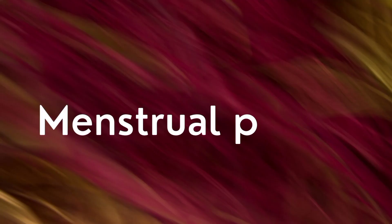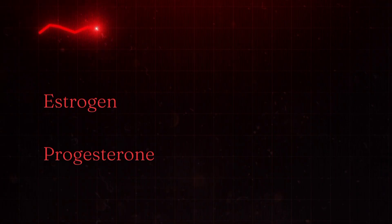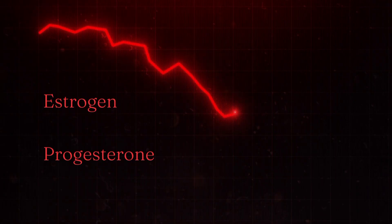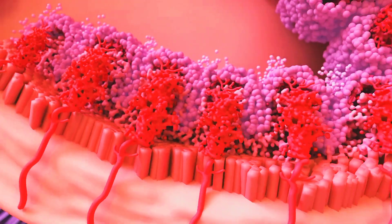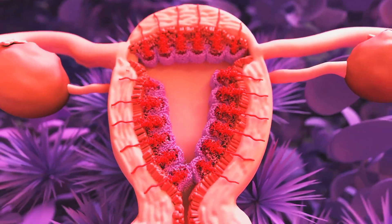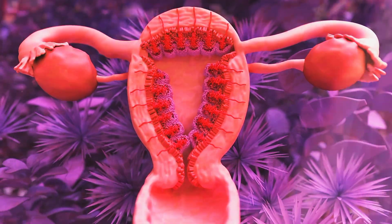If fertilization does not occur, the uterus prepares to shed its lining, marking the start of menstruation. Estrogen and progesterone levels drop, causing the blood vessels in the uterus to constrict, leading to the shedding of the uterine lining. Menstruation typically lasts around three to seven days.